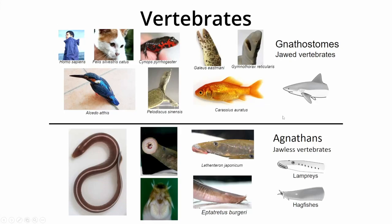Firstly, all of the vertebrates can be divided into two groups: the Gnathostomes and the Agnathans — the jawed vertebrates and the jawless vertebrates. Most of the vertebrate species which we can buy in the supermarket belong to this lineage. The Agnathans have just two living representatives: the hagfish and the lamprey.